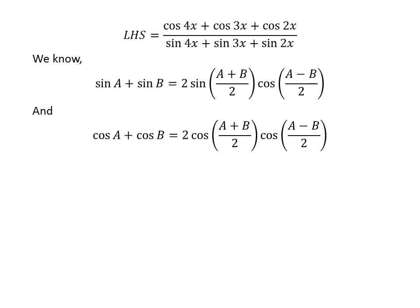We also know the famous trigonometry identity: cosine of a plus cosine of b is equal to 2 times cosine of half of (a plus b) times cosine of half of (a minus b). The proof of this identity is given in the video appearing in the upper right corner, and the link is also given in the description section.